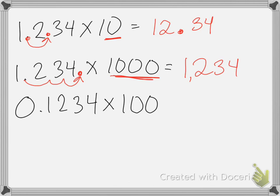Now this time I have 0.1234 and I'm multiplying it by 100. So two zeros, I'm going to move the decimal place two times. 1, 2. So my answer is 12.34, which is the same answer as the first one.